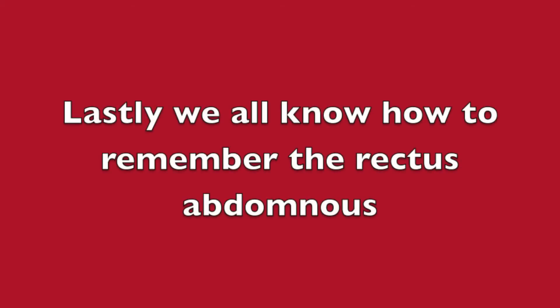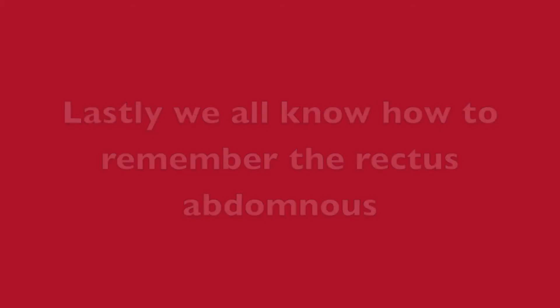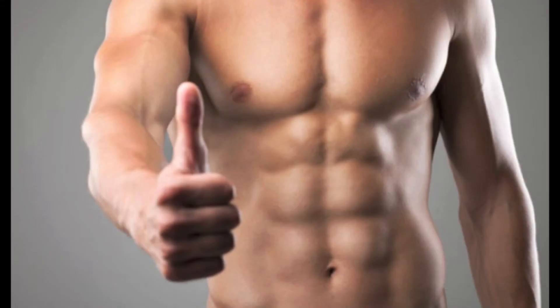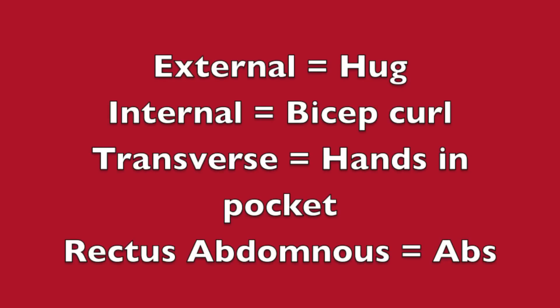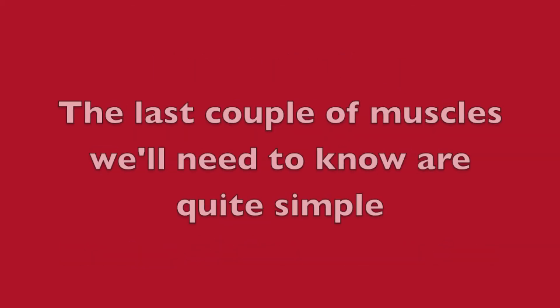Lastly, we all know how to remember the rectus abdominis. The external equals hug, internal equals bicep curl, transverse equals hands in pocket, and rectus abdominis equals abs.